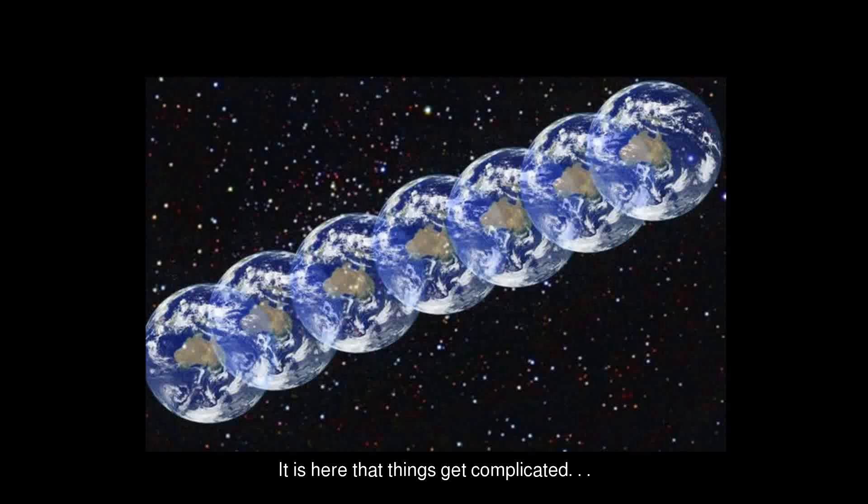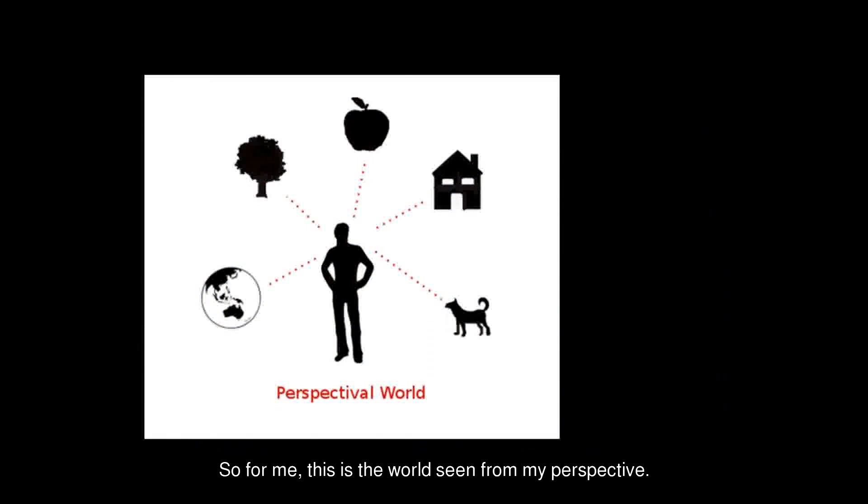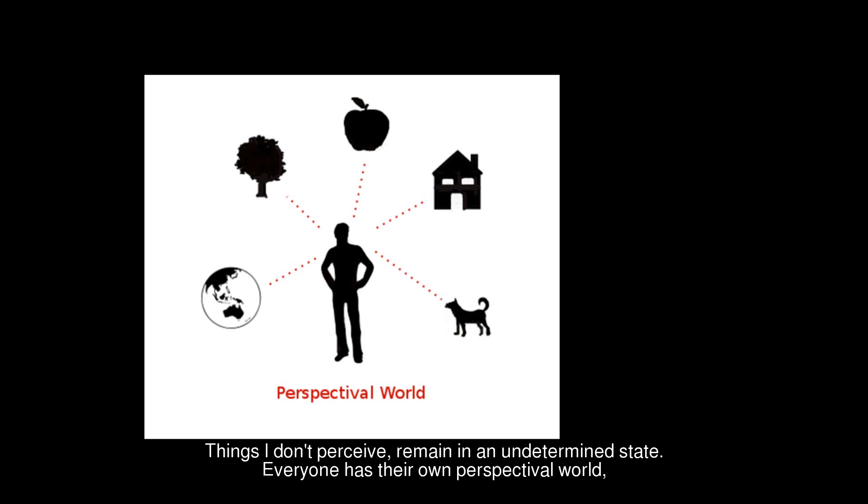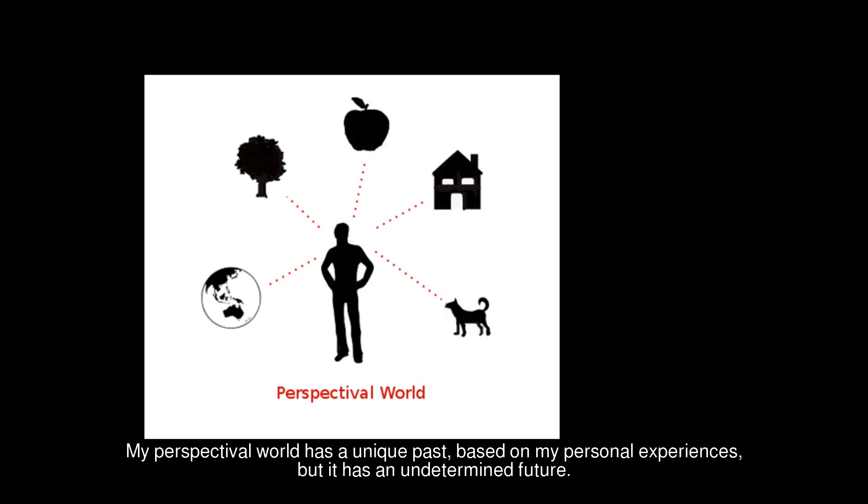It is here that things get complicated. The term world, in many-world hypotheses, is a perspectival world. So for me, this world is the world seen from my perspective. And everything in the world has a particular state based on my perception. Things I don't perceive remain in an undetermined state. Everyone has their own perspectival world. My perspectival world has a unique past, based on my personal experiences. But it has an undetermined future.